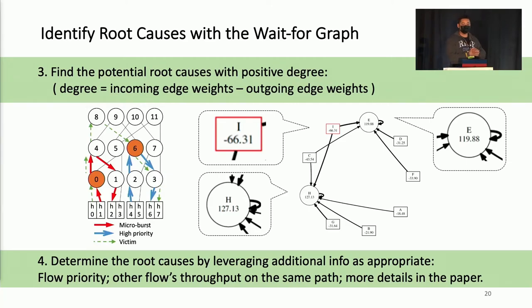After calculating the wait-for graph, for each node, which is each flow, we'll calculate a degree. This degree is calculated by incoming edge weight minus outgoing edge weight. And the larger the degree, it means that this flow blocks other flows much more than other flows block itself. So all the flows with positive degree are considered to be potential root causes. In the following multiple congestion scenario, we can see that the two flows who send much more data will be recognized as root causes very easily because their degree is very large.